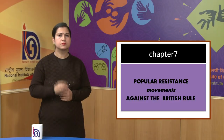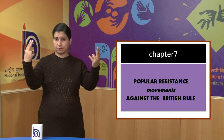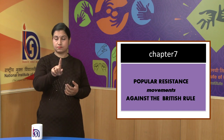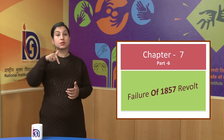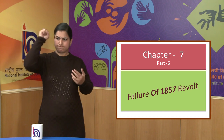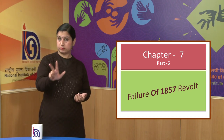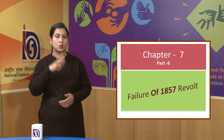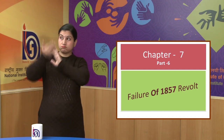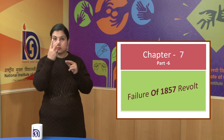Hello learners. Welcome to NIOS. Today we will study the sixth and final part of the seventh chapter. The chapter's name is 'Popular Resistance Movement Against the British Rule.' Our topic for today is the causes of failure of the revolt of 1857. This is a very interesting and important topic of Indian history. I hope you will enjoy watching this video.